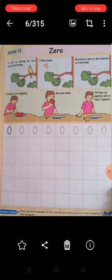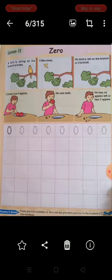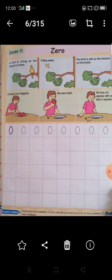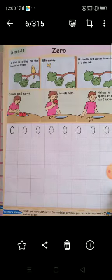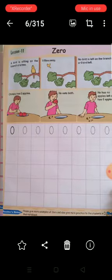Read both the stories. See the stories. One on top about the bird and one is about the boy eating the apples. Okay? Now one bird is there. That bird flies away. There are no birds on the tree. So it is zero.